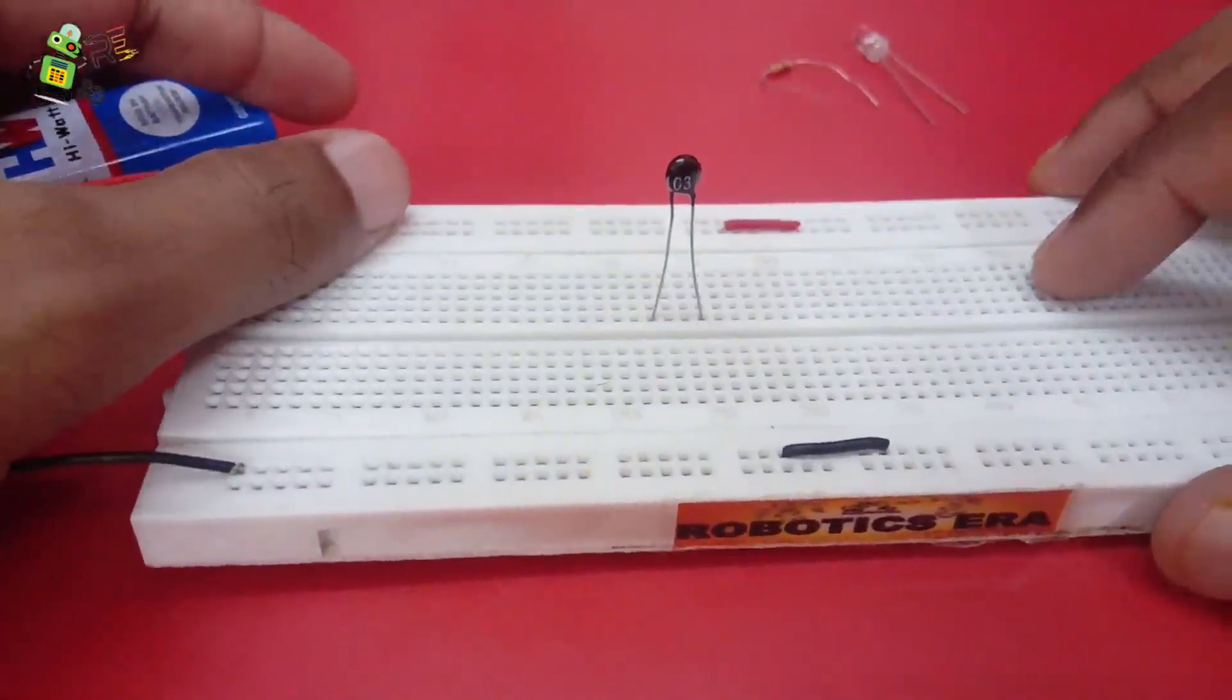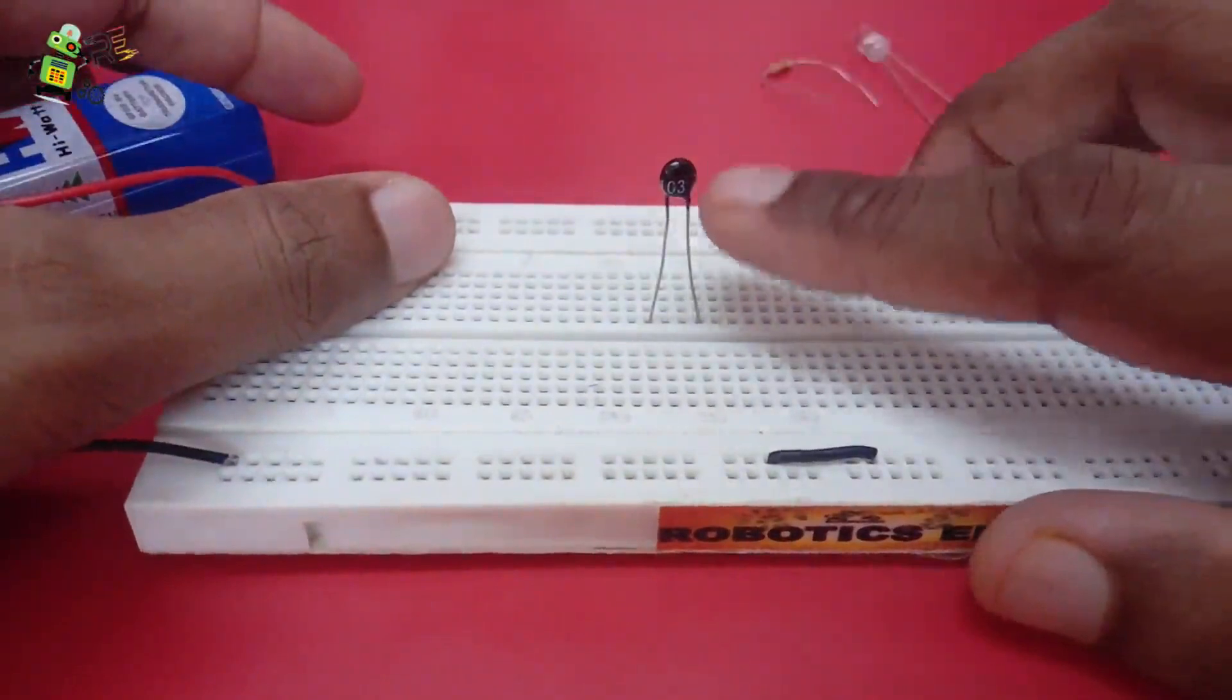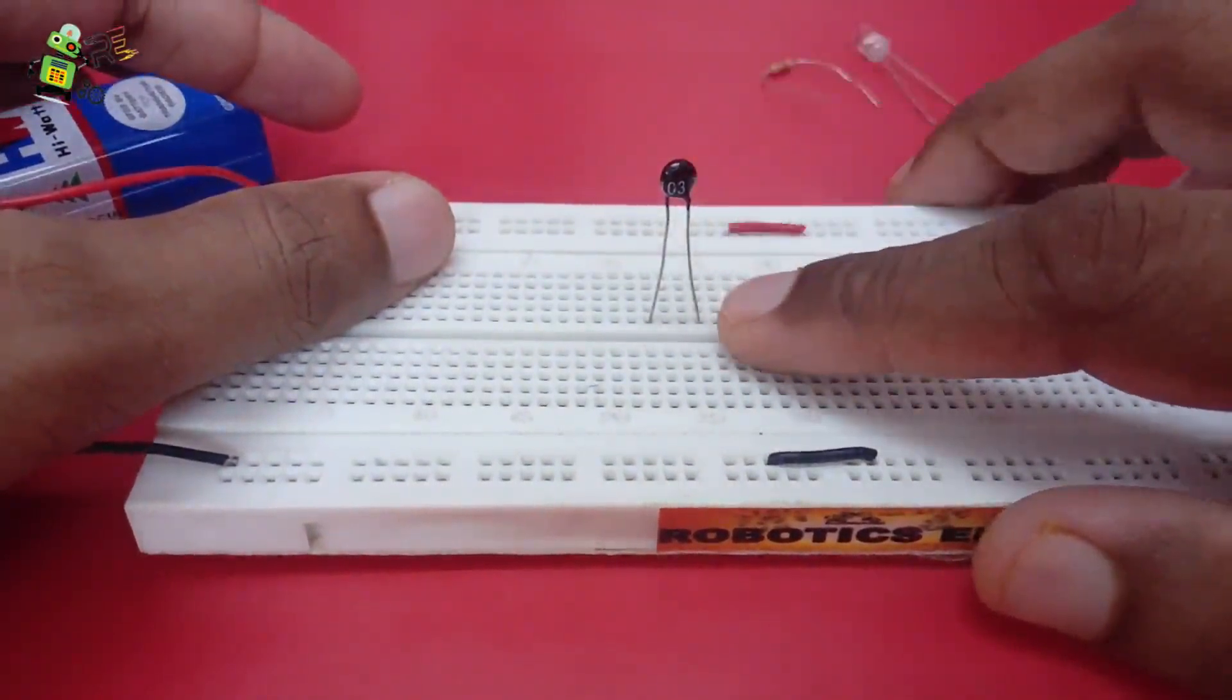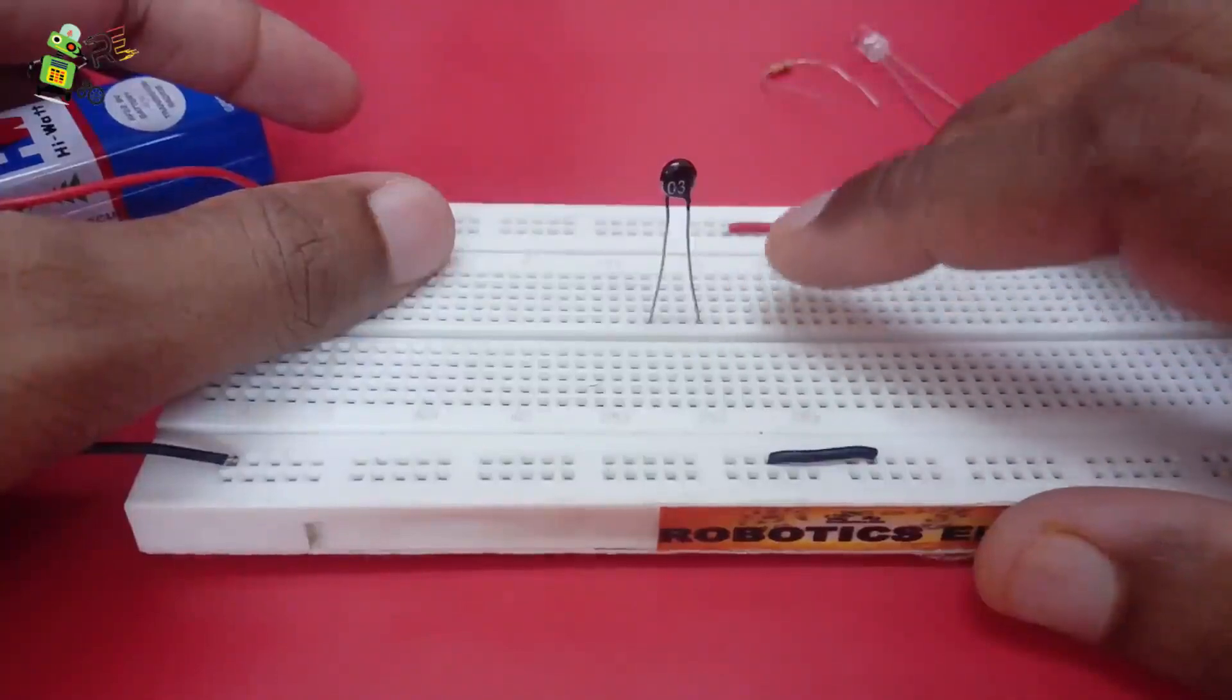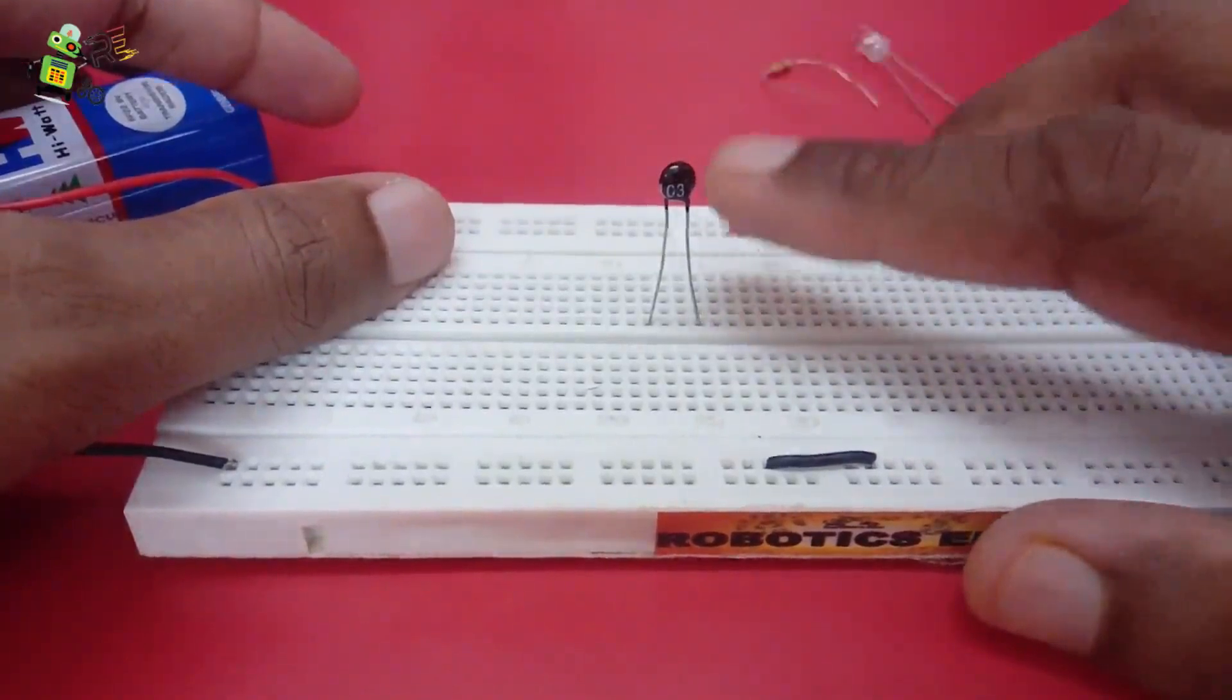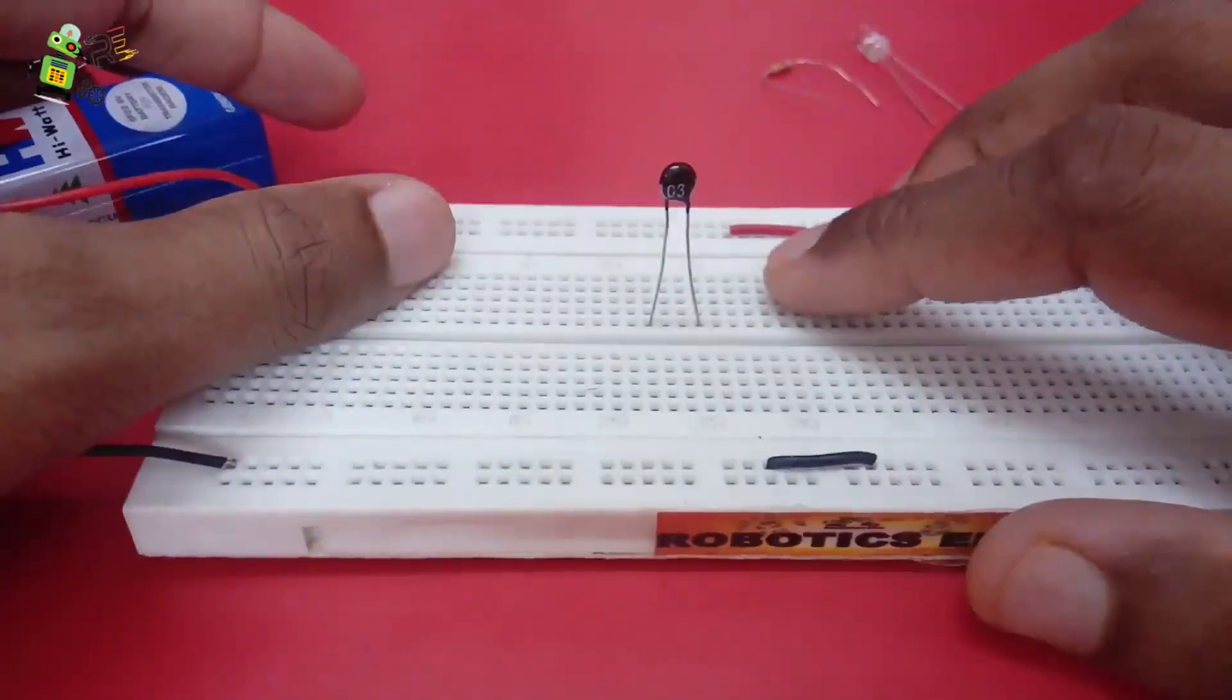NTC means negative temperature coefficient, which means when we apply heat on this surface its value decreases. And PTC means when we apply heat on the surface its value increases. So we are having this type of thermistor with us whose value will be decreased.